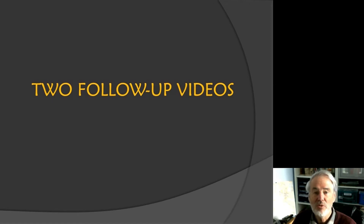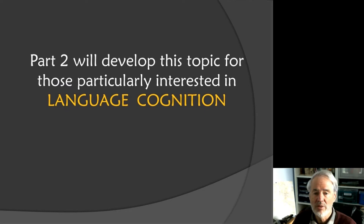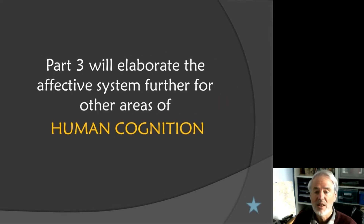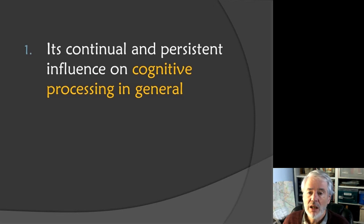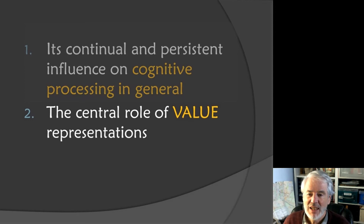There will be two follow-up videos. One will develop this topic for those particularly interested in language cognition — how language is represented and how it is acquired. The third part will continue looking at human cognition in general. The focus in this talk will be on how the affective system works in the mind as a whole — its continual persistent influence on cognitive processing in general, and the central role of value representations.